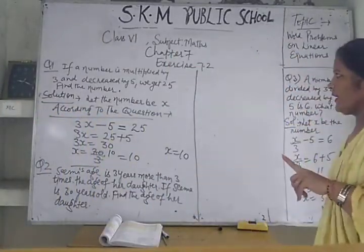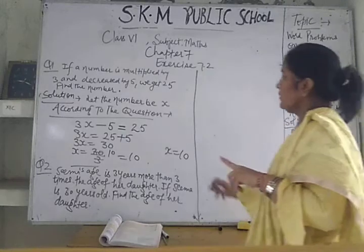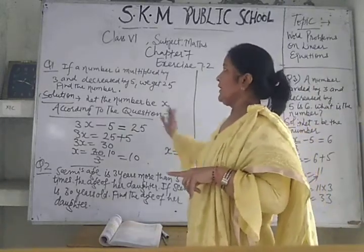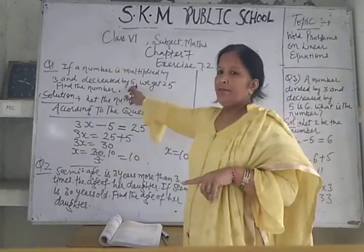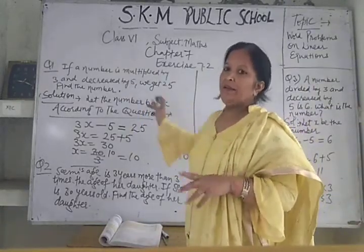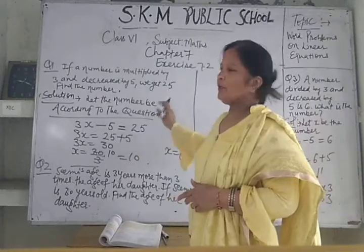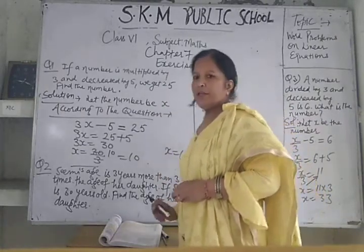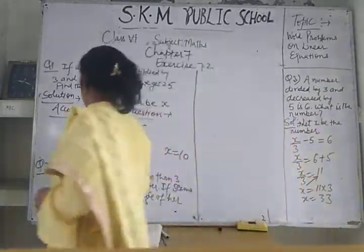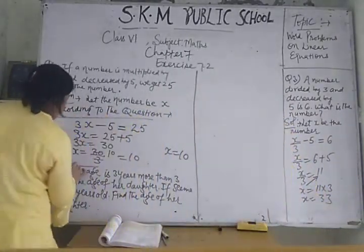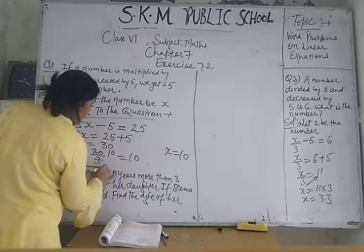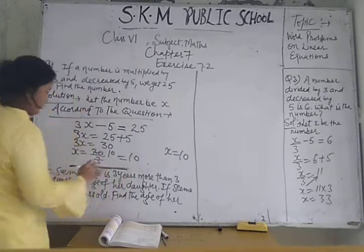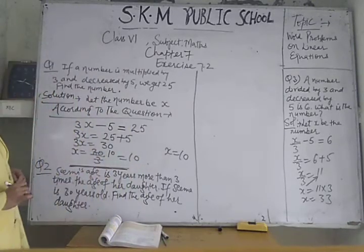The number is 10. When multiplied by 3 this becomes 30, and decreased by 5: 30 minus 5 is 25 — according to the question. In this way you will solve word problems.